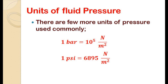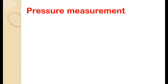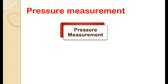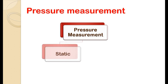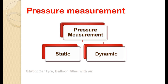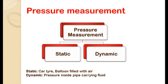Before moving to the actual pressure measurement devices, let us first understand a few topics. Pressure measurement is basically divided into two types: static and dynamic. When the pressure source is constant — like air pressure in our car tire or a balloon filled with air — this falls under static pressure. But when we are measuring fluid pressure in which the fluid is moving, it is called dynamic pressure.